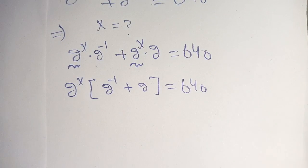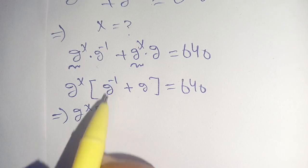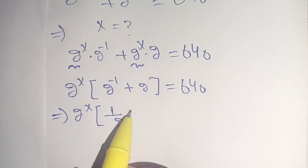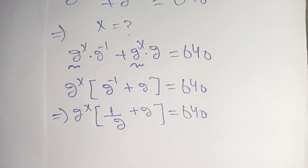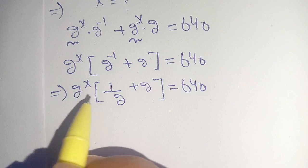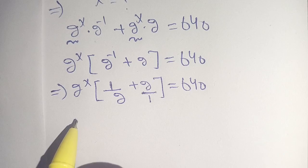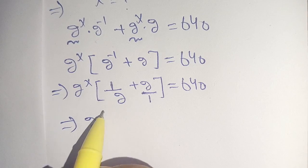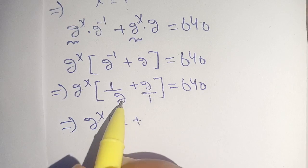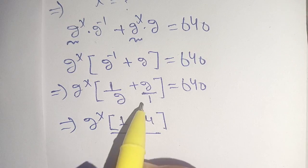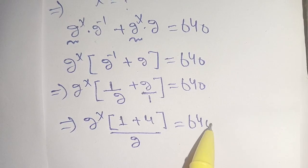Now in the next step we can write 2 power minus 1 as 1 divided by 2, plus 2, is equal to 640. We cross multiply: 2 power x times (1 times 1 becomes 1, plus 2 times 2 becomes 4), divided by 2 times 1 which is 2, is equal to 640.